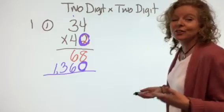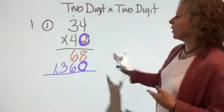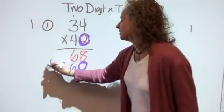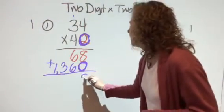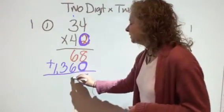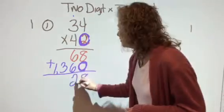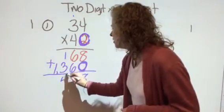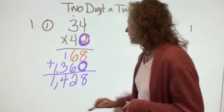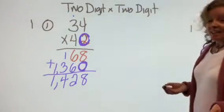Now I've taken apart these two problems. I did the ones place and the tens place. I've got to smoosh them back together. Let's add them up. Eight plus zero is eight. Six plus six is 12. Three plus one is four. And bring down that one. Ones, tens, hundreds.